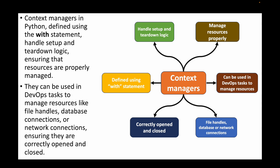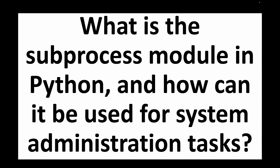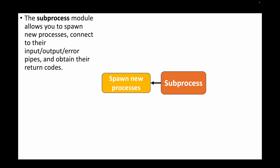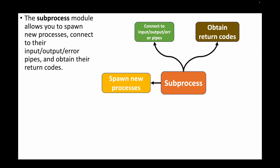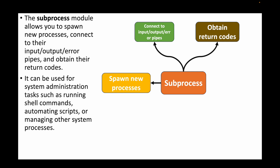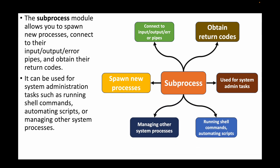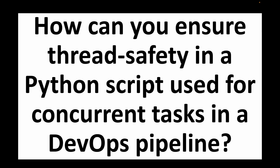The next question is: what is the subprocess module in Python and how can it be used for system administration tasks? The subprocess module can be used whenever you want to run a new process — for example, running Linux commands using a Python script. It will spin up new processes, connect to their input, output, or error pipes, and return the exit code of that command. This can be used for system admin tasks like running shell commands, automated scripts, or managing other system processes.